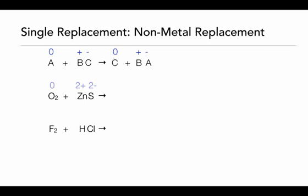In our first example, we're going to have oxygen with a zero oxidation state reacting with zinc sulfide. The zinc is 2 plus and the sulfur is 2 minus. The sulfur is going to be replaced, so sulfur will be by itself on the product side, and zinc and oxygen will form a compound. We drop the subscript 2 on the oxygen because zinc has a 2 plus oxidation state and oxygen will have a 2 minus oxidation state — therefore we only need one of each. We balance the reaction to make sure everything is equal on both sides, and we see that oxygen has gone from zero to 2 minus, and zinc has stayed the same as 2 plus.